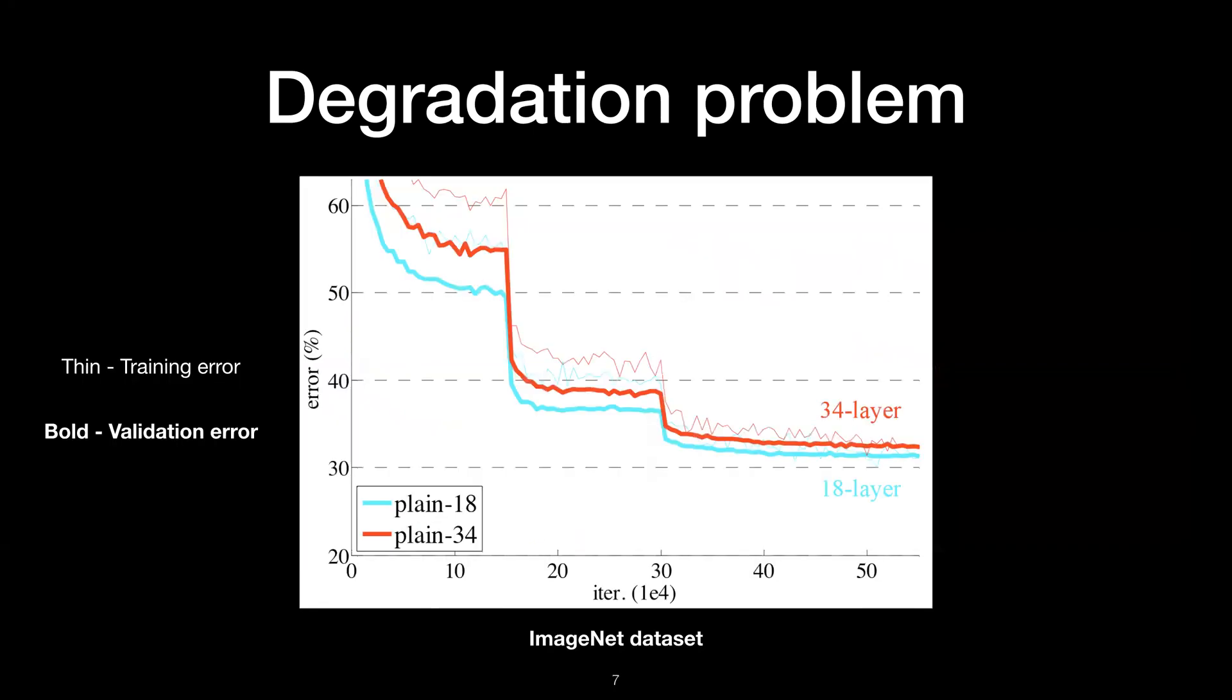This also happens in ImageNet data as well. Even though 34 layer model has more expressive power, it has both higher validation and training error. Since it has higher training error, we cannot say the degradation is caused by overfitting.